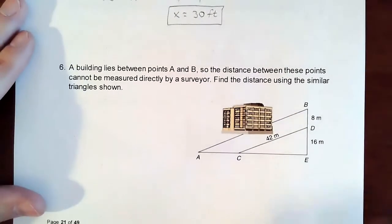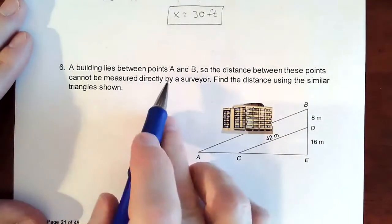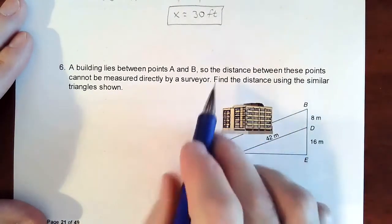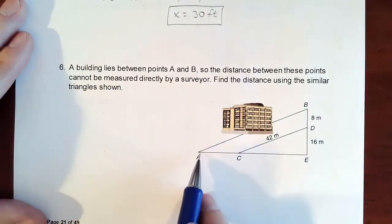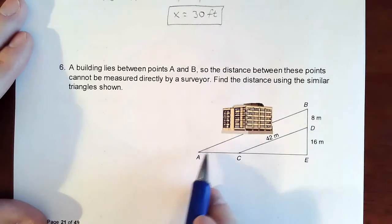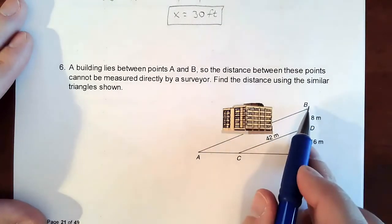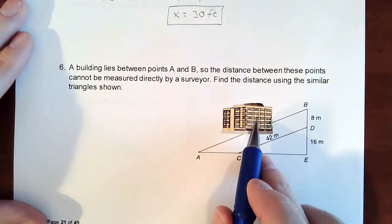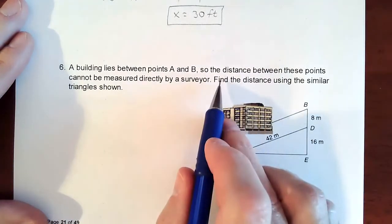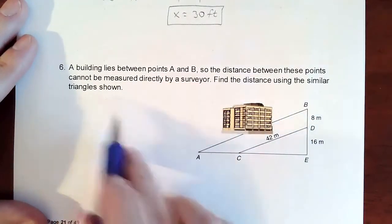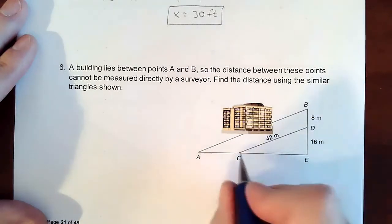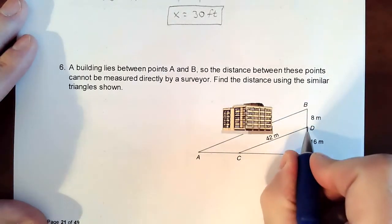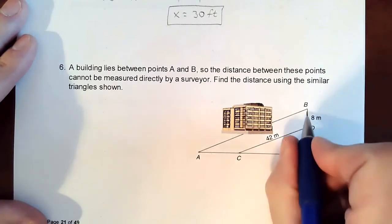Last one. It says a building lies between points A and B. The distance between these points cannot be measured directly by a surveyor. The surveyor is setting up the little tripod thing, and we're trying to measure that distance over to here, but there's an object in the way. So to fix that, it says find the distance using a similar triangle shown. So the surveyor bumps up the distance to here and measures across to this distance, which is going to be in a straight line with B.